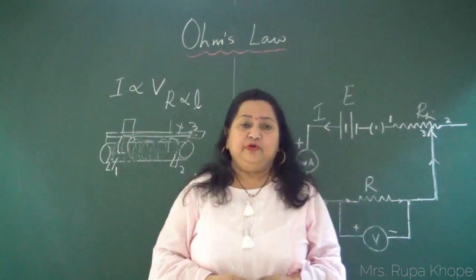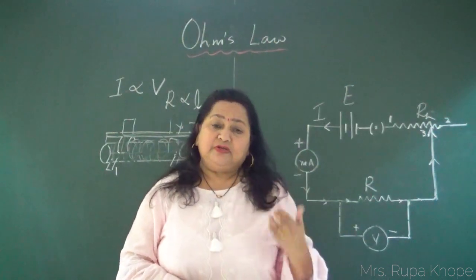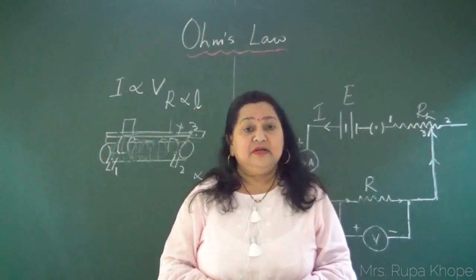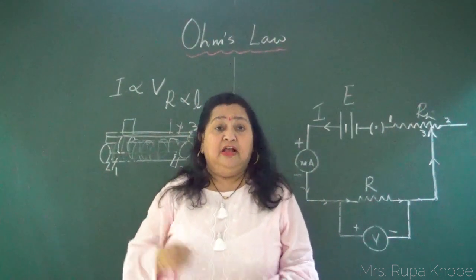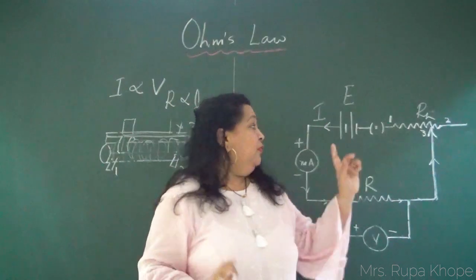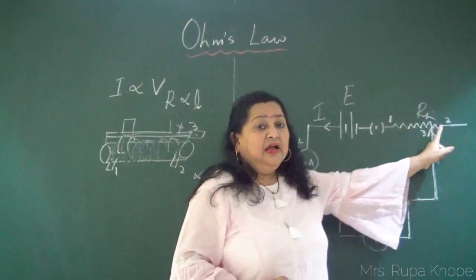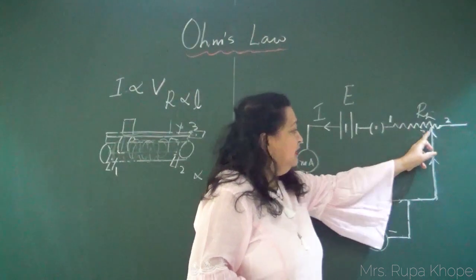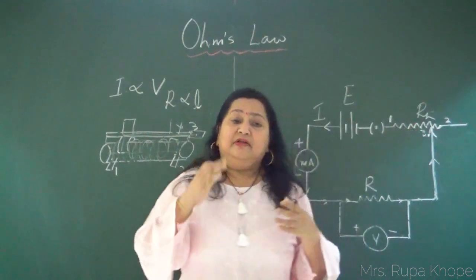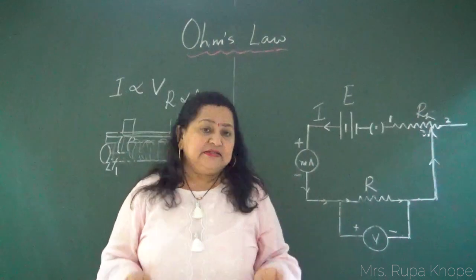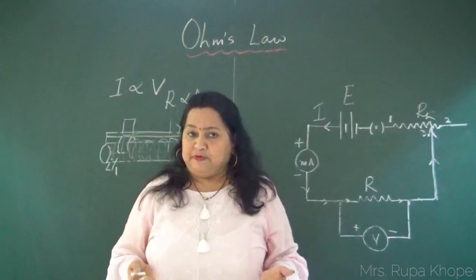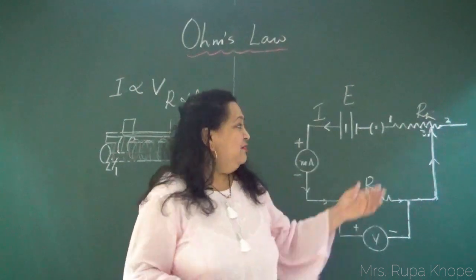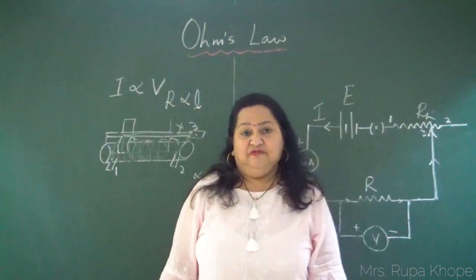There is one more use of the rheostat — as a potential divider, which we will use in the PN junction diode experiment. For now, we are using only terminals 1 and 3, with terminal 2 left free. As you keep moving terminal 3 along the wire, the length changes, resistance changes, and current changes — so you can control the current using the rheostat as a variable resistor.